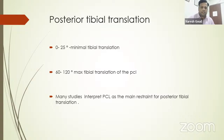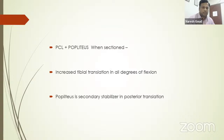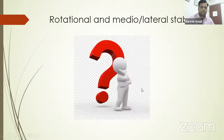Many studies confirm PCL is the main restraint for posterior tibial translation. Regarding the role of popliteus: in a study where both PCL and popliteus were sectioned, tibial translation increased in all degrees of flexion. This shows that popliteus acts as a secondary stabilizer for posterior tibial translation, apart from maintaining the rotatory stability of the knee joint. Rotational and medial-lateral instability from PCL alone remains unclear; multiple studies are ongoing.